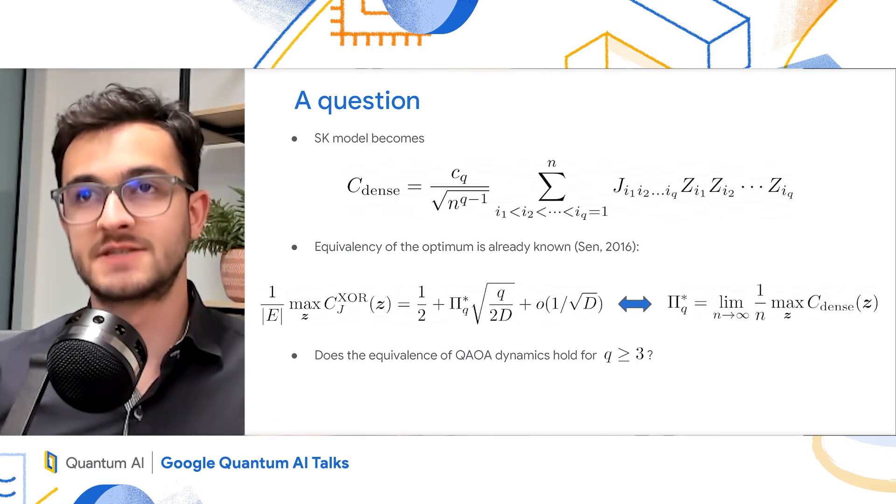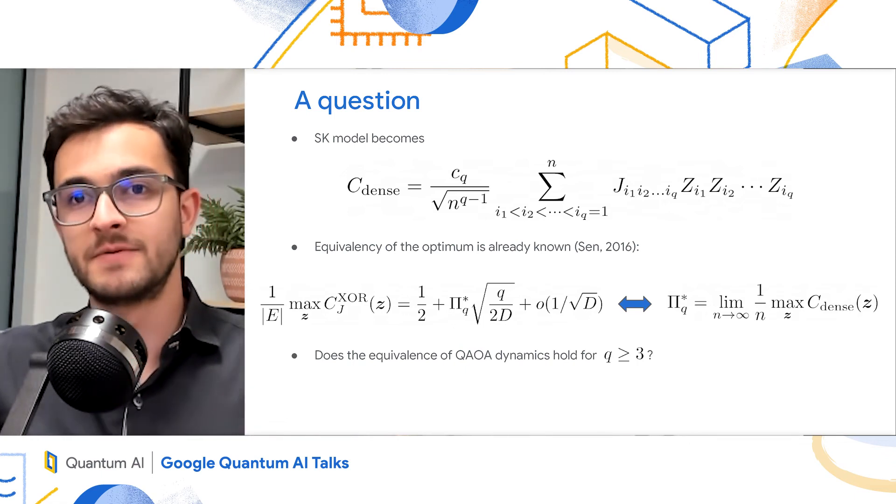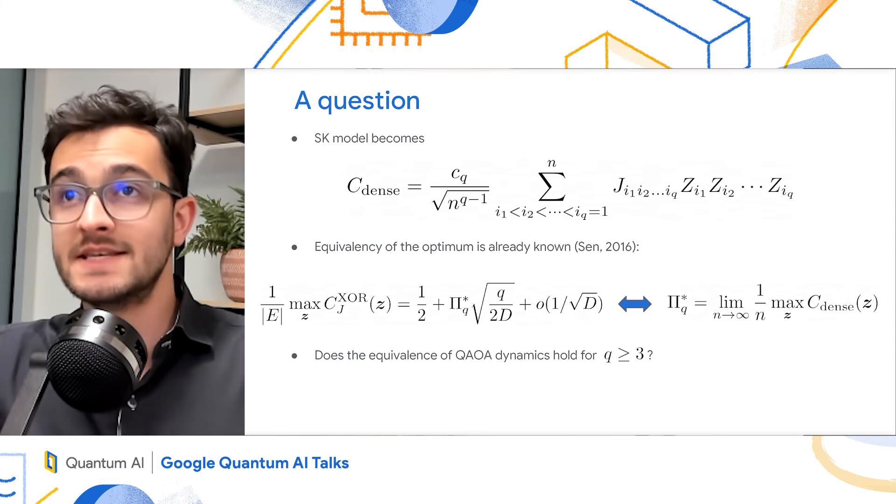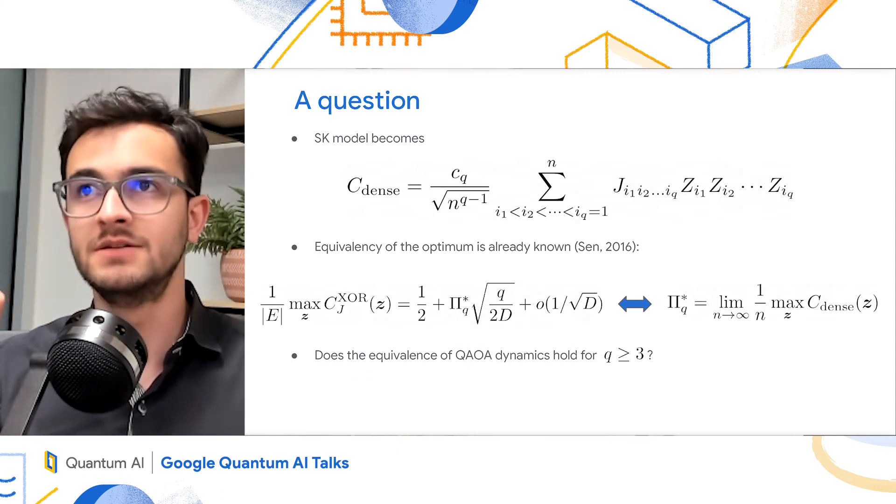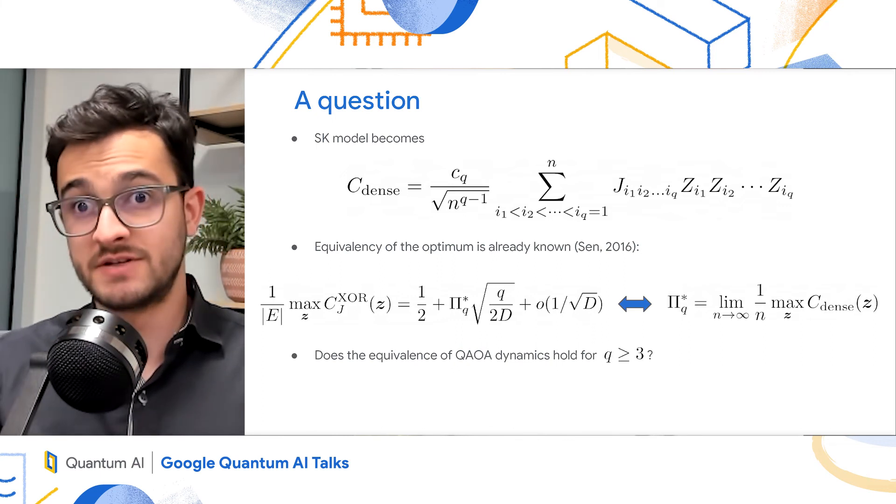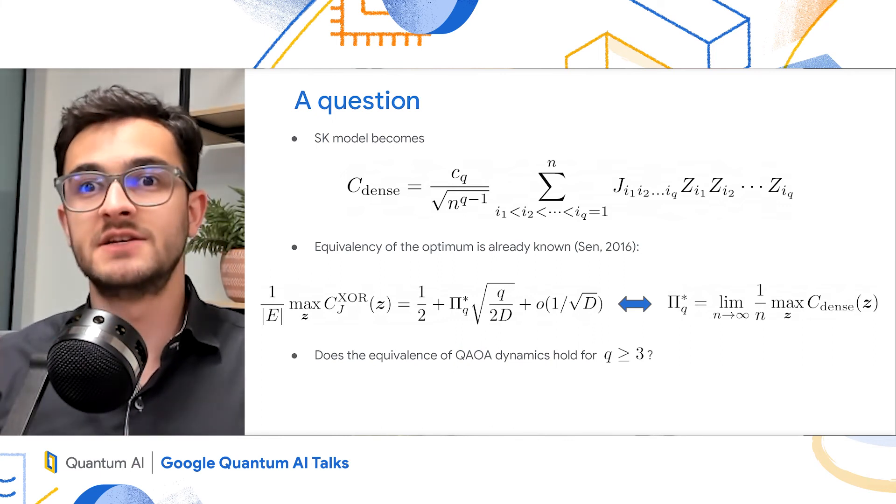So again, the cut fraction in the Max-Q-XOR case is 0.5 plus something of order 1 over root d. And this numerator, again, depends on the generalized Parisi value. Meanwhile, the generalized Parisi value is the ground state energy density of the q-spin model.